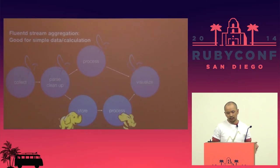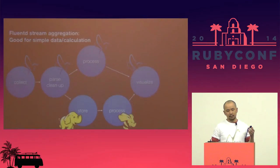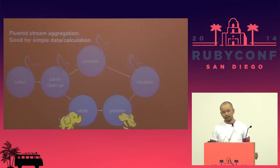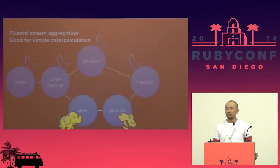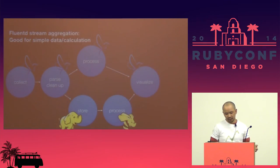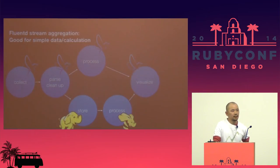Fluentd has extension and plugin features, and we can write and use any plugins to aggregate stream data and generate percentages and various other metrics. We can then put this data into graph tools or any other visualization tools. So Fluentd is very good for simple data or simple calculations.